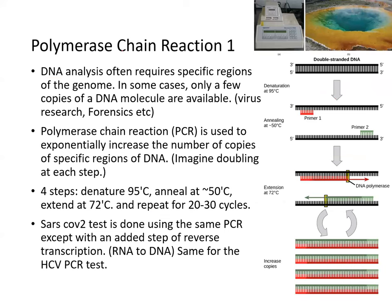Then polymerase chain reaction — what is that? DNA analysis often requires a specific region of the genome to be analyzed. In some cases, only a few copies of the DNA molecule are available, like in virus research, forensics, and crime labs. So the polymerase chain reaction is used to exponentially increase the number of copies of a specific region of DNA. Imagine doubling at each step.